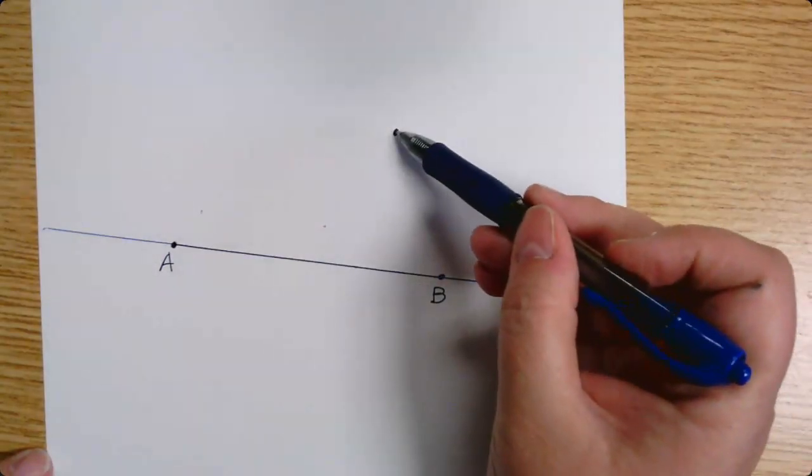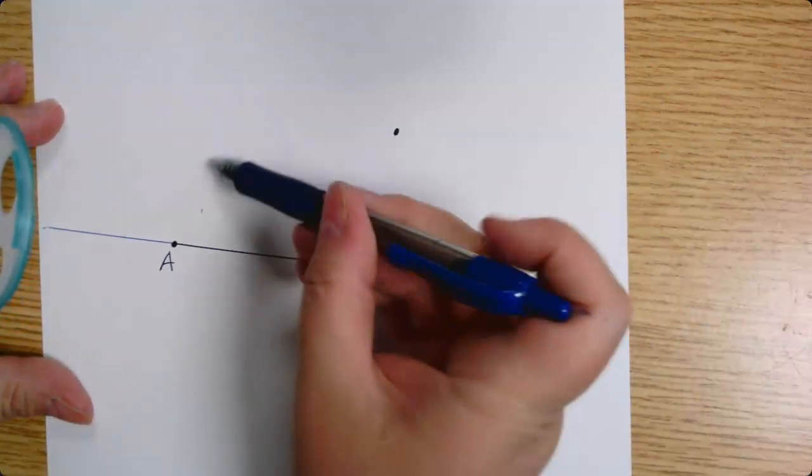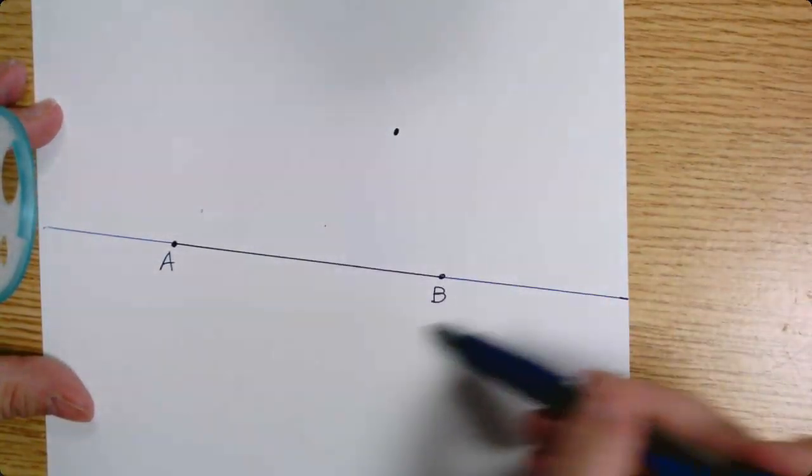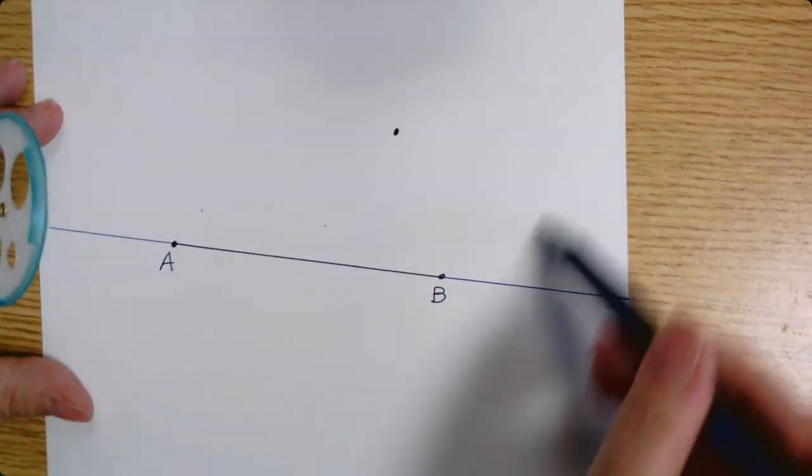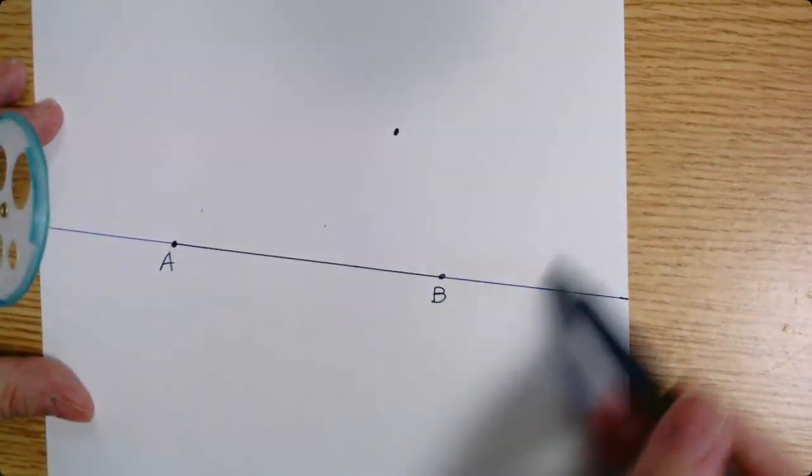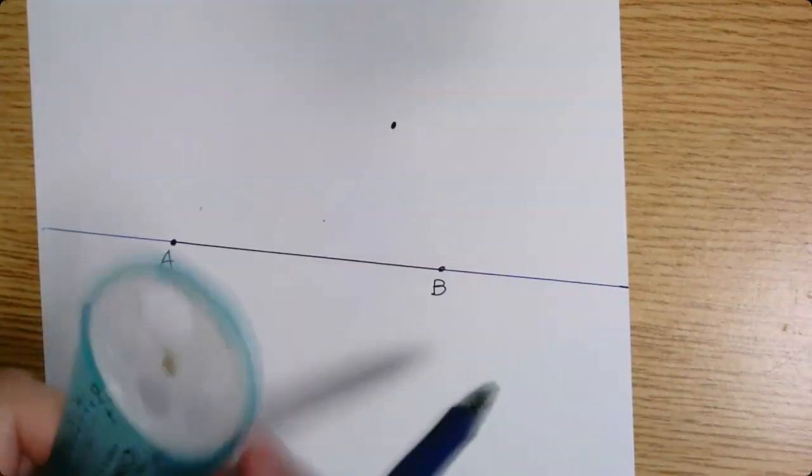Because what I'm going to do is I'm going to use this as my center, the metal brad is going to go on top of it, and I'm going to make an arc that sweeps across the line in two places. And if I tried to do that without making this longer, it would have probably just been out here in space when it goes to the right of B. So let's do that and see.